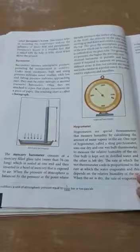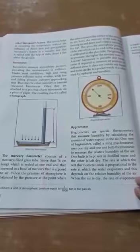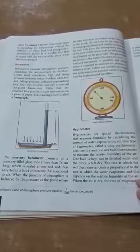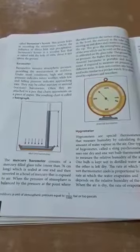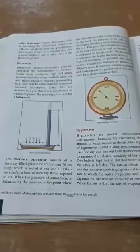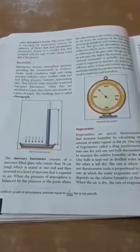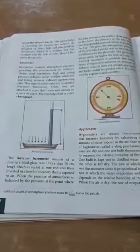They may be either mercury or aneroid barometers. Often they are attached to a pen that charts movements on a piece of paper. The resulting chart is called a barograph.